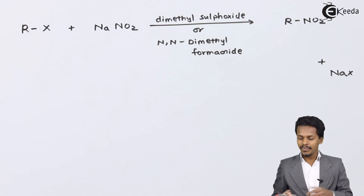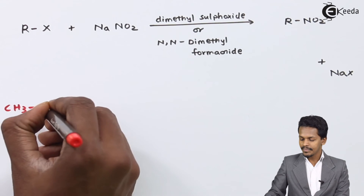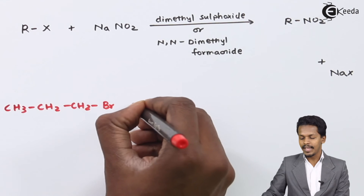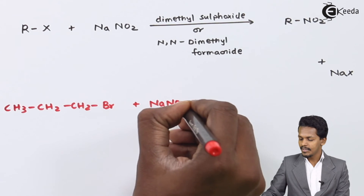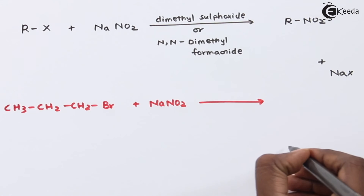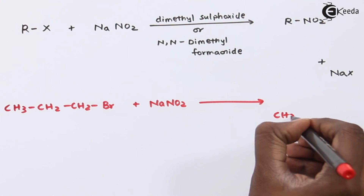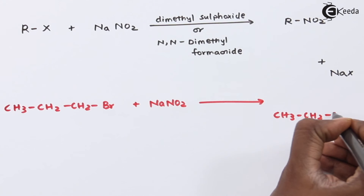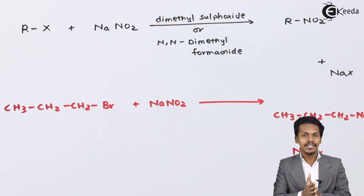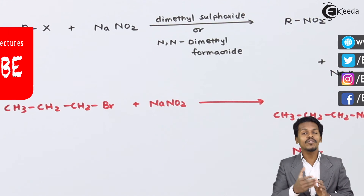For example, consider CH3CH2CH2CH2Br reacted with NaNO2 in the appropriate solvent. NaBr is removed as the byproduct, and the main product formed is CH3CH2CH2CH2NO2. This is how we convert an alkyl halide into the corresponding nitroalkane using sodium nitrite.